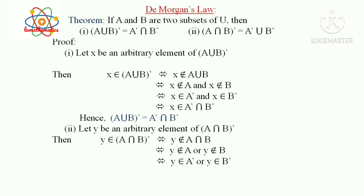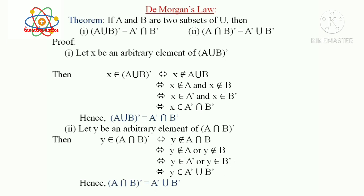This implies Y is an element of A' or Y is an element of B'. That is, Y is an element of A' union B'. So we get (A intersection B)' is a subset of A' union B'. This completes the proof of De Morgan's Law.